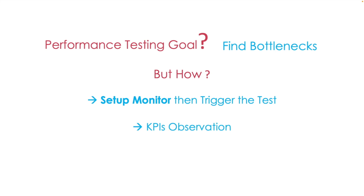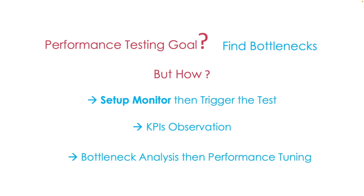You'll get KPIs from JMeter. For each round of testing, you need to observe the KPIs to see if there are any abnormal KPIs. Then we should focus on those things. Finally, based on the testing results, we can do bottleneck analysis to pinpoint the performance issues, and give tuning suggestions to the development team for performance tuning.